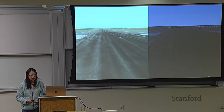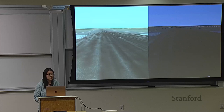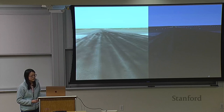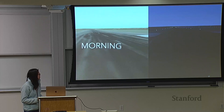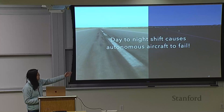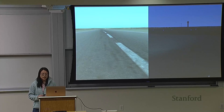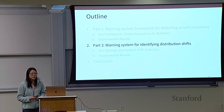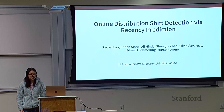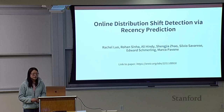If there is a distribution shift, not only do we lose those guarantees, our system might also perform worse. For example, here's an autonomous airplane taxiing system that fails and causes the aircraft to go off the runway when daytime turns to nighttime — daytime on the left, nighttime on the right, and we can see the airplane veering off the runway. So we want to be able to identify when the distribution shifts. That brings me to the second part of this talk: a warning system for identifying distribution shifts. The relevant paper is called "Online Distribution Shift Detection via Recency Prediction," also on arXiv.